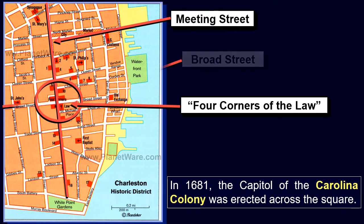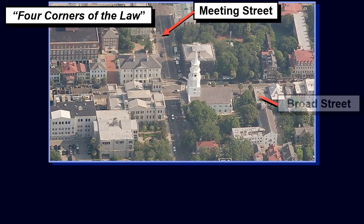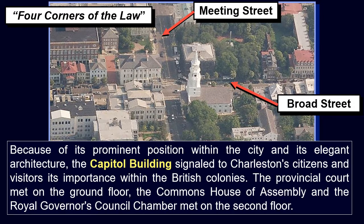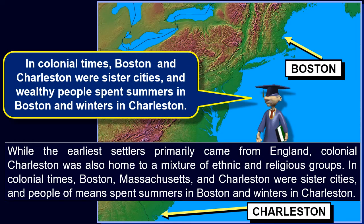In 1681, the capital of the Carolina Colony was erected across the square. Because of its prominent position within the city and its elegant architecture, the Capitol building signaled to Charleston citizens and visitors its importance within the British colonies. The Provincial Court met on the ground floor; the Commons House of Assembly and the Royal Governor's Council chamber met on the second floor. Boston and Charleston were sister cities, and people of means spent summers in Boston and winters in Charleston. There was a great deal of trade with Bermuda and the Caribbean, and some people came to live in Charleston from these areas.